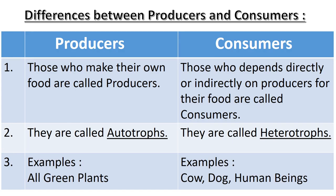Those who depend directly or indirectly on producers for their food are called consumers. Producers are also called autotrophs, whereas consumers are called heterotrophs. All green plants are producers because they all contain chlorophyll. Few examples of consumers are cow, dog, and human beings.